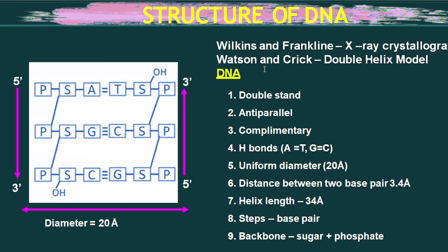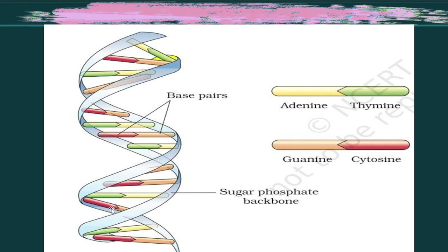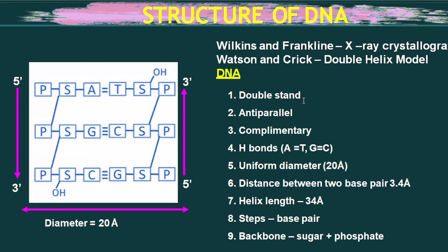DNA has a double helix structure — two helices are formed. It is a double strand. One strand runs five to three, and the other strand runs three to five directions, making it antiparallel. The strands show complementarity: adenine pairs with thymine, and guanine pairs with cytosine. DNA is a double-stranded, antiparallel, complementary molecule.